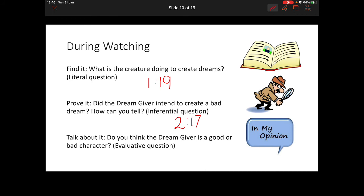Our final question is a talk about it or evaluative question, which means you share your view, your opinion on this. It's not a factual thing that I'm looking for. It's just what you think. Do you think the Dream Giver is a good or a bad character? Now you might say he is a good character and you have a reason for that or you may say he's a bad character and you have a reason for that. But you must have a proper reason.